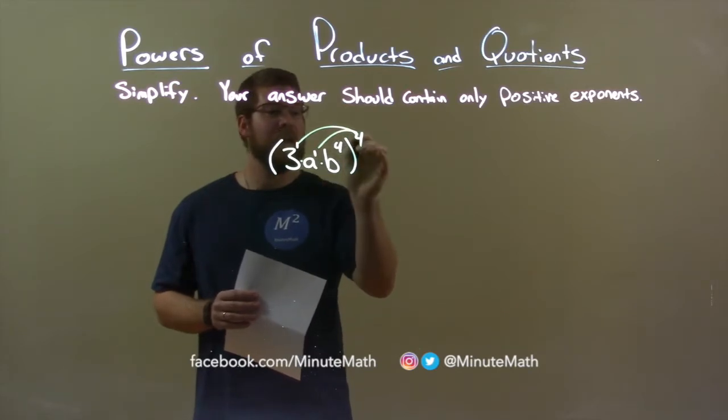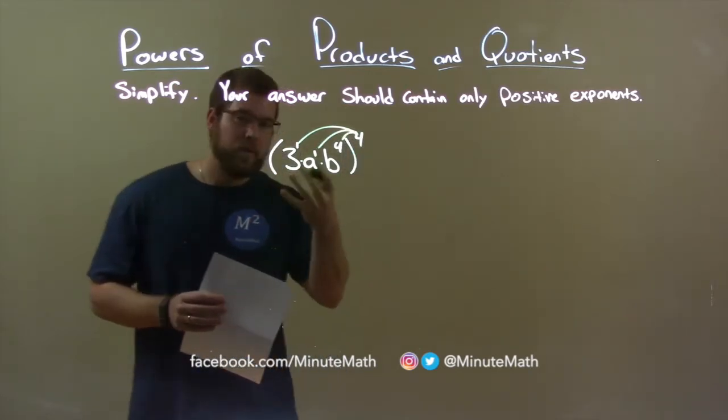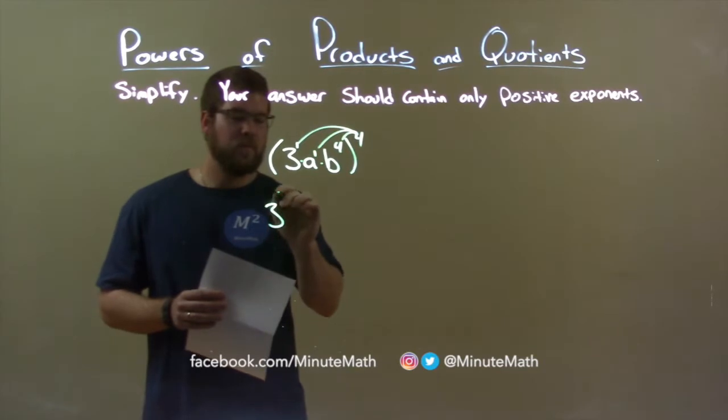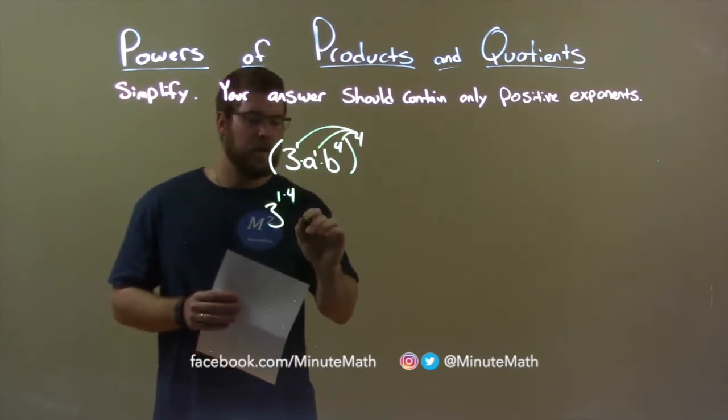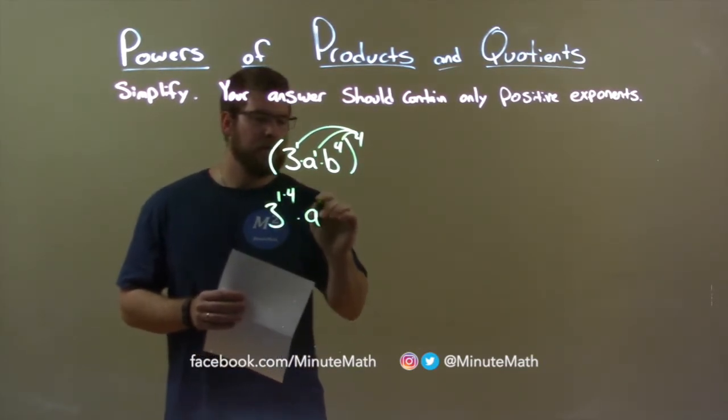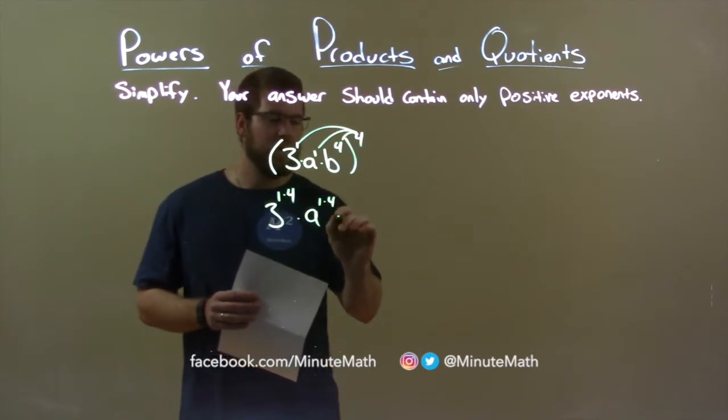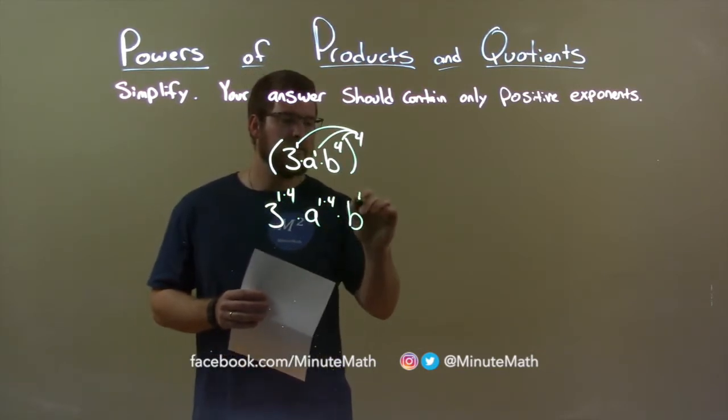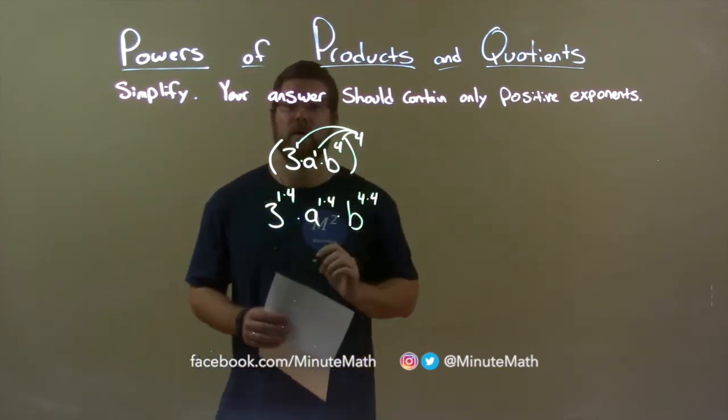So, what we can see here is 3 to the 1 times 4 power, times a to the 1 times 4 power, times b to the 4 times 4 power.